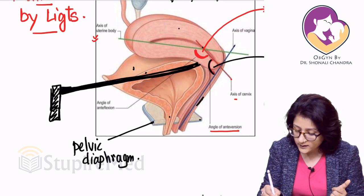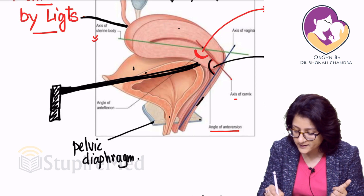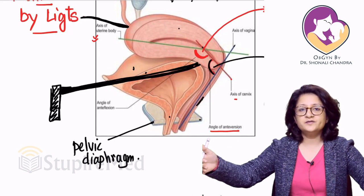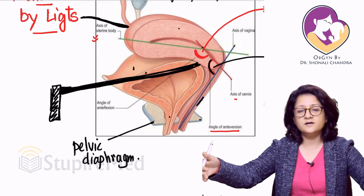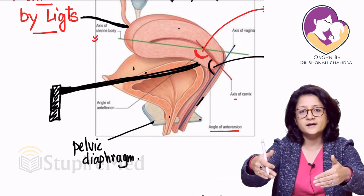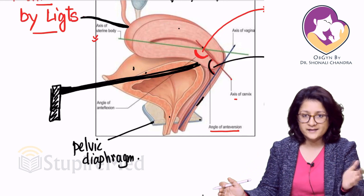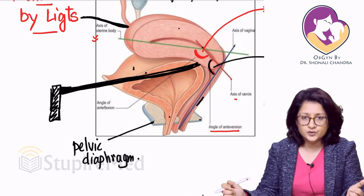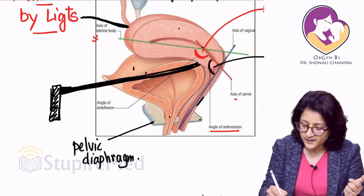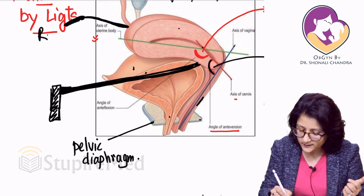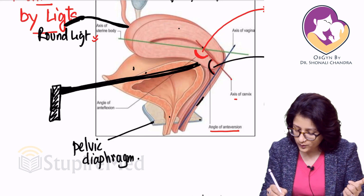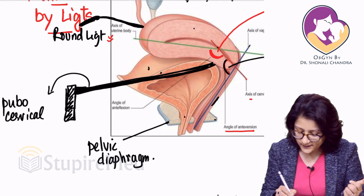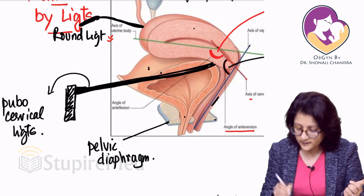Then there are the round ligaments. The round ligaments run from the cornu of the uterus through the deep inguinal ring, along the inguinal canal, through the superficial inguinal ring, and ultimately into the labia majora. So they give a forward tug to the uterine body. These are the two ligaments — round ligament and pubocervical ligaments — which maintain anteflexion.